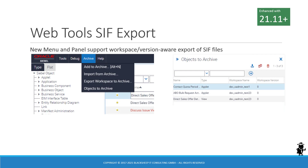Let's take a moment to look at the Web Tools enhancements that come with 21.11. You will recognize the new version and any future version by the existence of a new menu in Web Tools. The menu is labeled Archive and this menu allows us to add a selection of records to the archive, and also to start the import wizard and export the entire workspace to archive. There is a fourth option visible in the menu, which is called Objects to Archive.